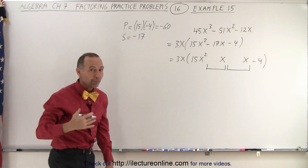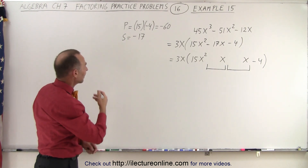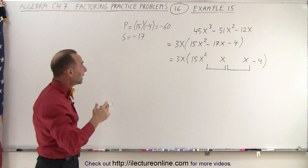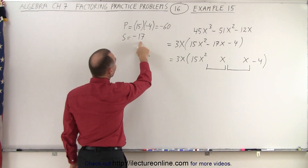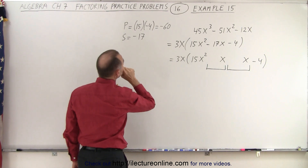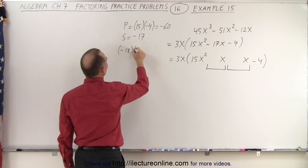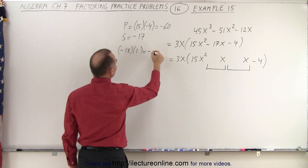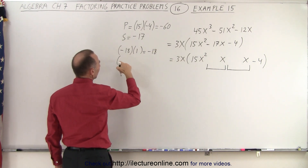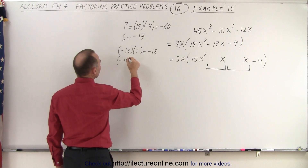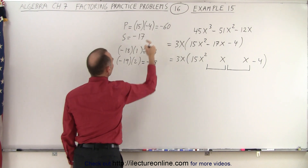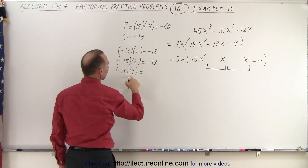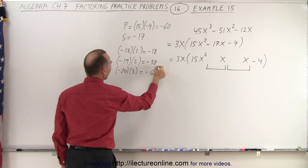So we're looking for two numbers: when you multiply them, we get negative 60, and when we add them, we get negative 17. One must be positive and one must be negative, and the bigger one must be negative. We can try minus 18 times positive 1 — that adds to negative 17, but multiplies to minus 18, not minus 60. If I try minus 19 times 2, that is minus 38, still not minus 60. If I try minus 20 times 3, that adds up to negative 17, and when I multiply, I get minus 60.